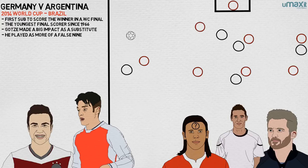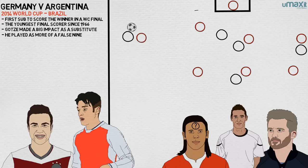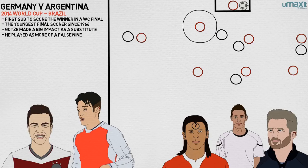Schöller managed to cross, despite pressure from two Argentina defenders, including Zabaleta, and with Di Micheleis in no man's land between the edge of the box and the six-yard area. Gotze controlled the cross on his chest and rifled in a volley with his left across Romero.